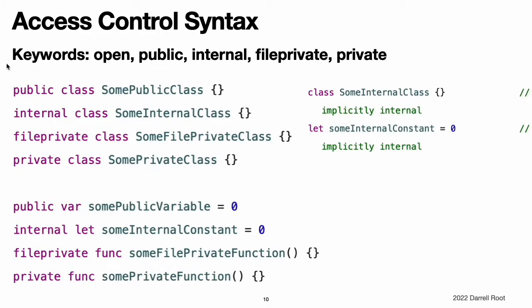Access control syntax. Define the access level for an entity by placing one of the open, public, internal, file private, or private modifiers at the beginning of the entity's declaration. Unless otherwise specified, the default access level is internal, as specified in default access levels. This means that some internal class and some internal constant can be written without an explicit access level modifier and will still have an access level of internal.